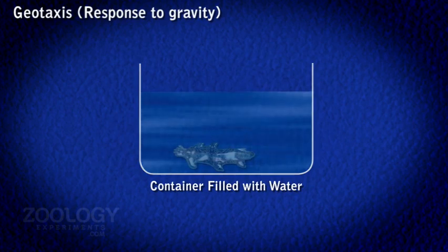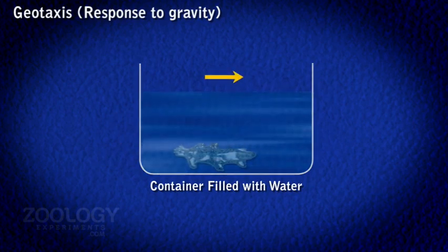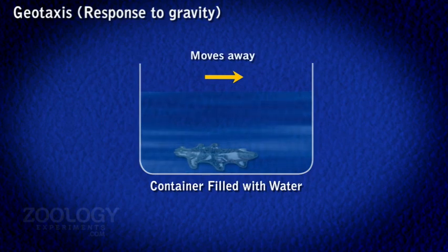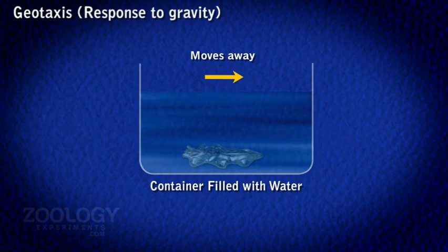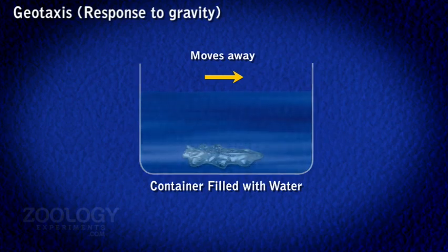Amoeba does not have a nervous system or special sense organs for the reception and perception of stimuli. The sensitivity is solely the function of the protoplasm.